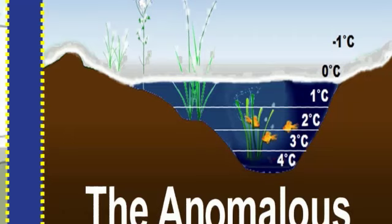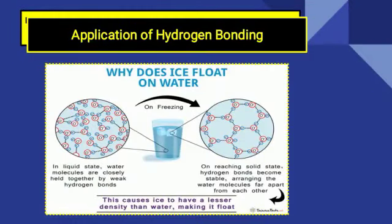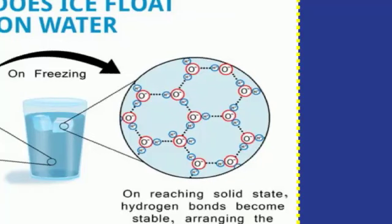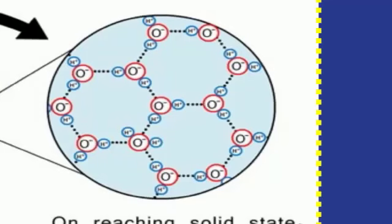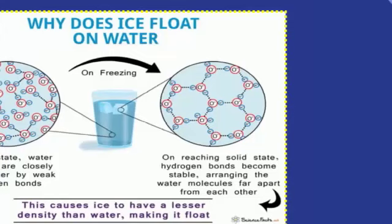Humare paas equation hai: D = M/V, jisme density mass of any substance ke equal hoti hai, aur density aur volume inverse relation mein hote hain. Waja yeh hui ke jab temperature decrease hoga to water ke molecules hexagonal structure banayenge aur mid mein empty space aa jayegi. Six water molecules aapas milke ek ring structure bana lete hain aur mid mein yeh space aa jati hai, jiske wajah se volume increase ho jata hai. Is waja density badhne ki bajaye decrease ho jati hai.